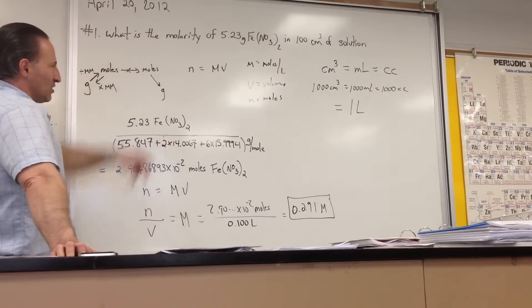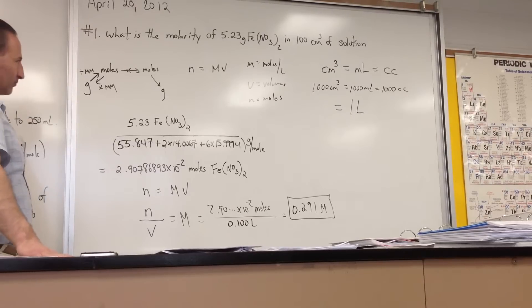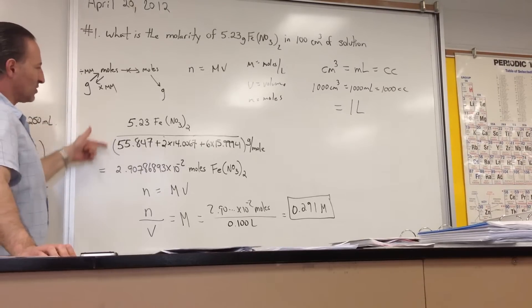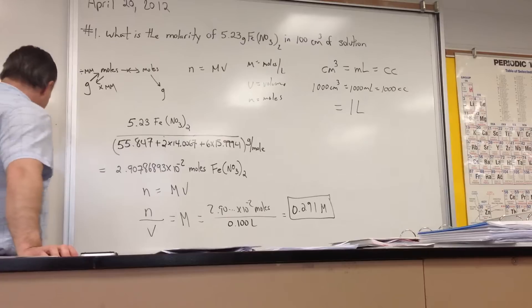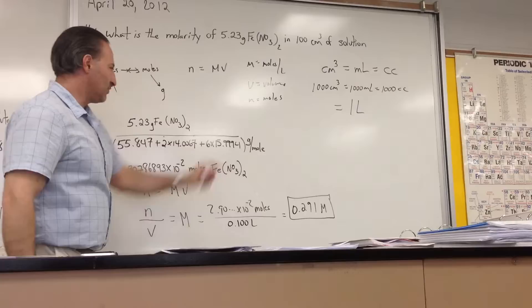With those two formulas, you can solve just about any molarity problem. So, the first step is to find out how many moles of ferrous nitrate we have. We have 5.23 grams of ferrous nitrate, and we divide by the molar mass of ferrous nitrate.